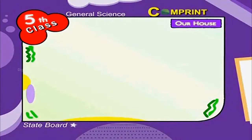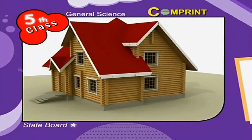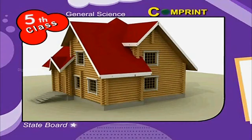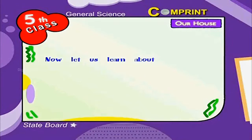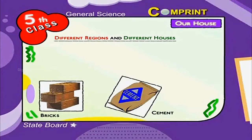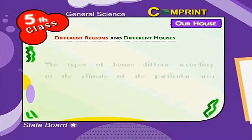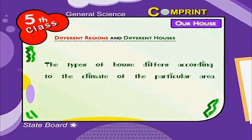A house gives us protection — it protects us from heat, rain, and cold. The same type of house cannot withstand all types of climate. Let us learn about different regions and different houses. The primary materials used for constructing a house are bricks, cement, glass, sand, etc. The types of houses differ according to the climate of the particular area.